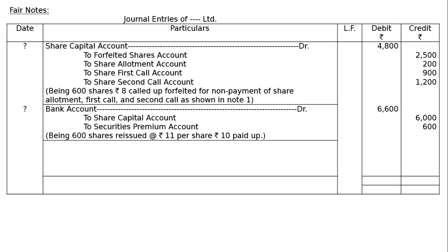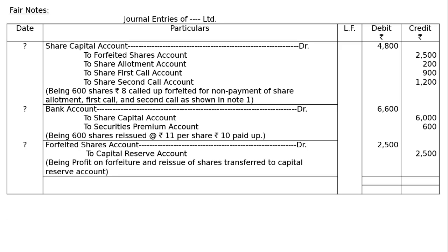Next, capital reserve entry. Share forfeited account debited to capital reserve. We collected forfeited Rs.2,500 and resold at zero discount, so Rs.2,500 is profit. Being profit on forfeiture and reissue of shares transferred to capital reserve account — Rs.2,500 minus 0 = Rs.2,500. The totalling will be Rs.13,900 both debit and credit. This is the final answer.